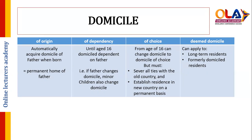First, domicile of origin. The domicile of origin is automatically acquired based on the domicile of the father when a person is born — essentially based on the permanent home of the father. So if a person is UK domiciled and his permanent home is UK, his children automatically get the domicile of origin in UK.